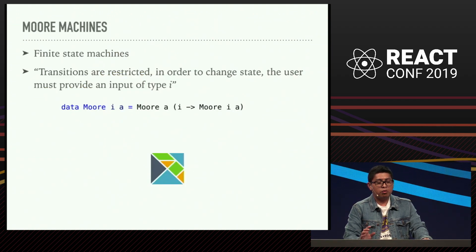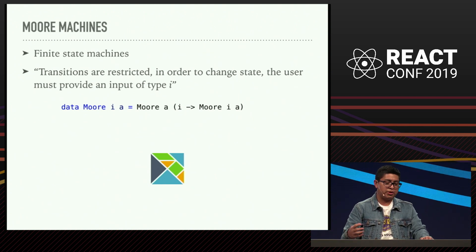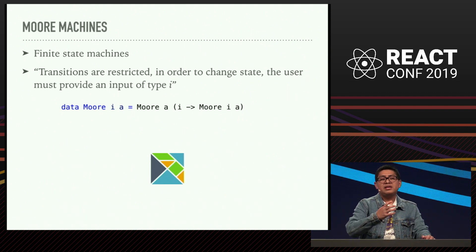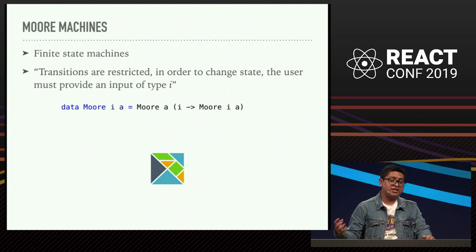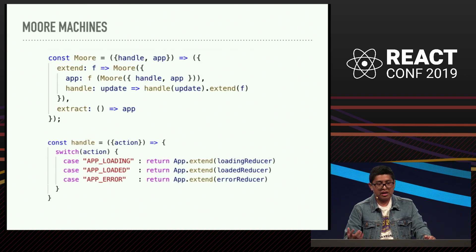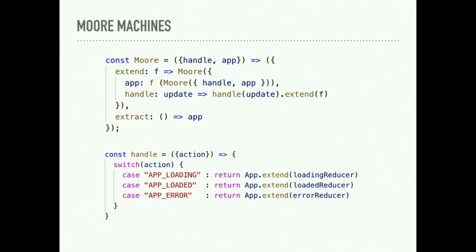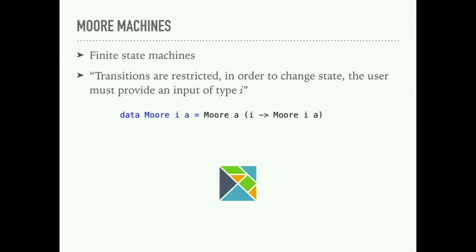We have more examples for what CoMonads are capable of doing. We have Moore machines. What are Moore machines? These are finite state machines where the transitions are restricted according to the type of the input I. That is very similar to what Redux is doing — it restricts the change of state according to the type of the input, as you see in a reducer. A Moore object takes a handle function and an application. Extract simply takes the application of that object, and Extend handles that update and moves whatever is inside to a next state.